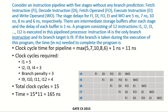Consider an instruction pipeline with 5 stages without any branch prediction: fetch instruction, decode instruction, fetch operand, execute instruction, and write operand. The stage delays for these 5 stages are 5, 7, 10, 8, and 6 nanoseconds respectively.